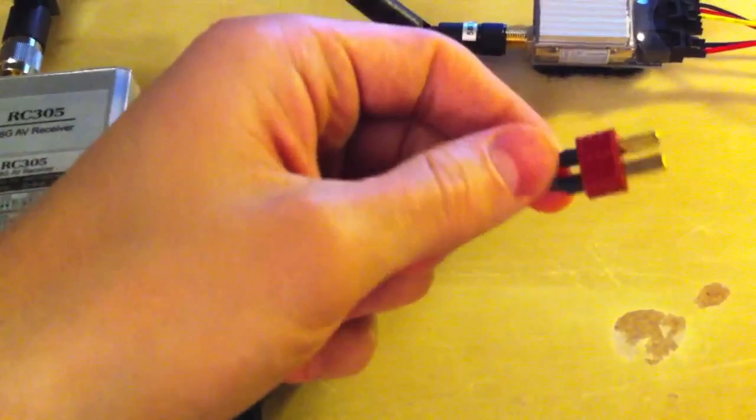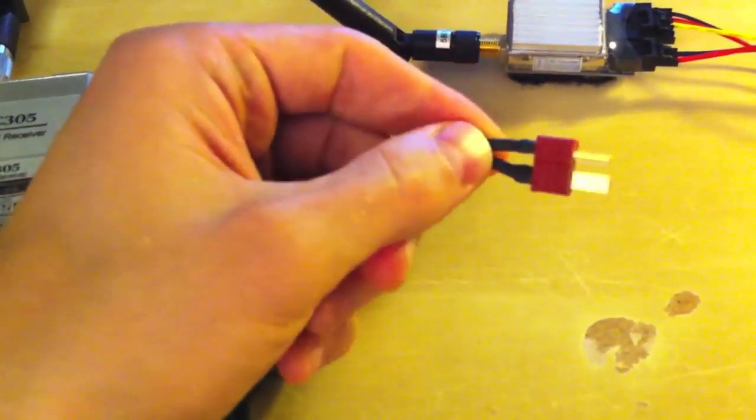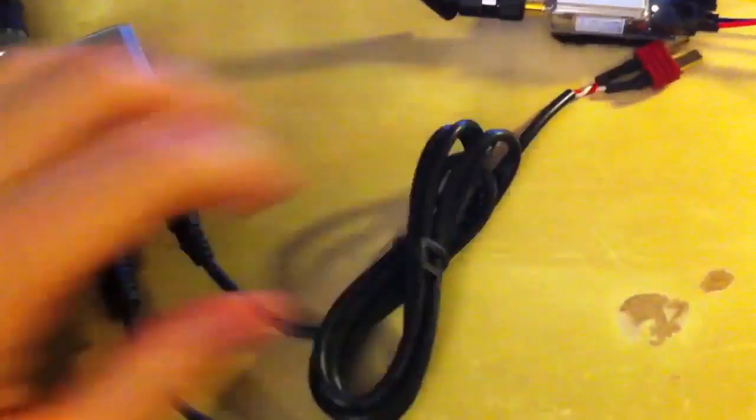First I'm going to cover the receiver. This comes with two wires. The first one is a power cable. It came with a JST plug. I just connected a Dean's connector on here because that's how all my batteries are.